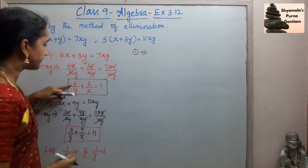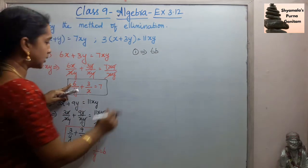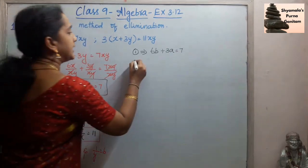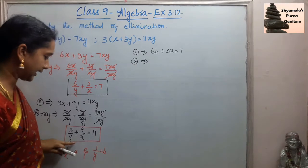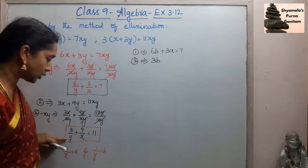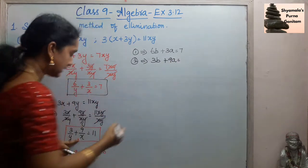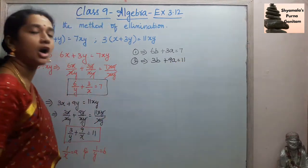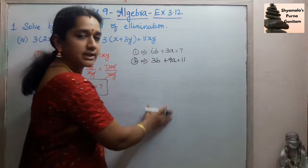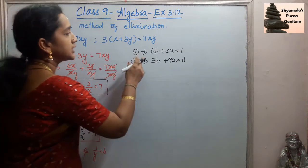Substituting into the first equation: 6/y becomes 6b and 3/x becomes 3a, so the first equation becomes 6b + 3a = 7. The second equation becomes 3b + 9a = 11. We now have two equations in variables a and b. We will find the values of a and b, then substitute back to find x and y.